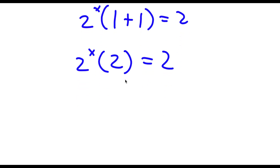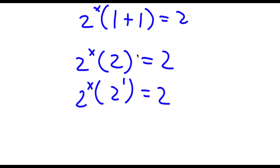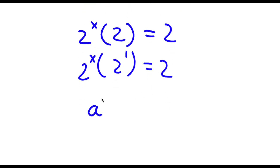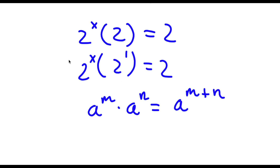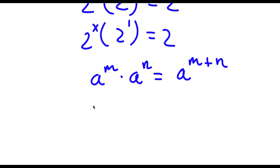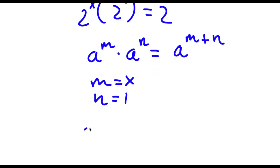Now if I simplify what's in the parentheses, I get 2 to the power of x times 2 is equal to 2. Now I'm going to multiply these two. So 2 here is the same thing as 2 to the power of 1. And if I have something in the form a to the power of m times a to the power of n, this is the same thing as a to the power of m plus n. So in this case m is equal to x and n is equal to 1, giving me 2 to the power of x plus 1 is equal to 2.